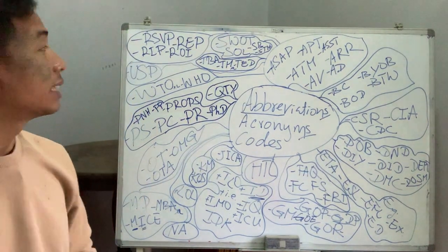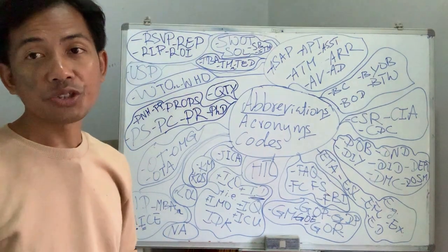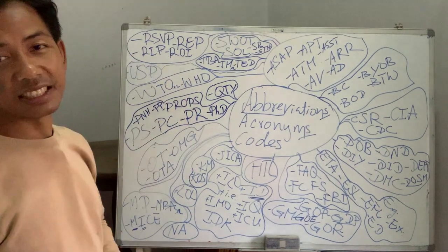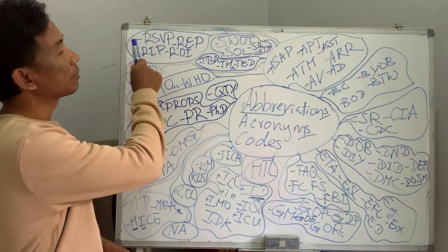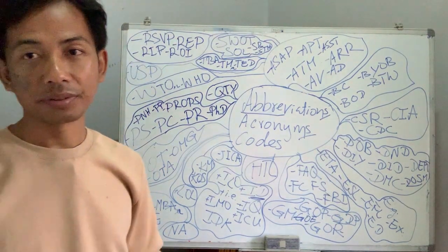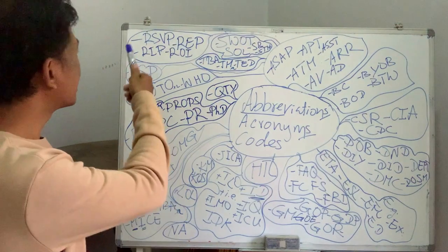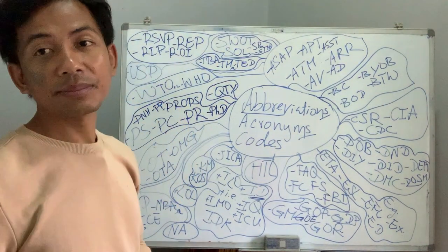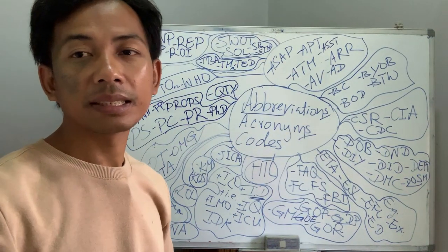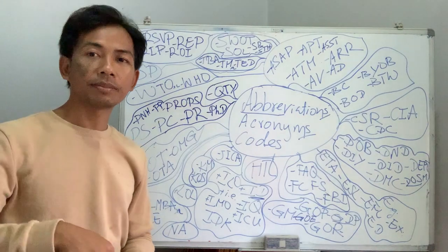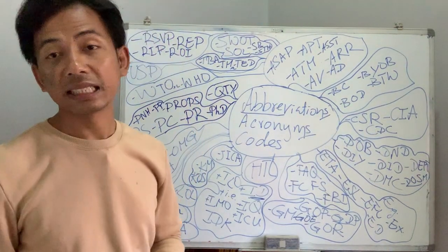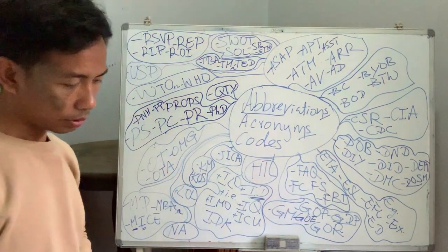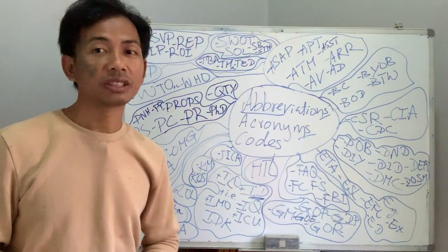RSVP — this is more of a French way of doing it but also very common in English. It stands for 'répondez s'il vous plaît,' meaning please respond or please reserve. Also REP is the airport code for Siem Reap Airport — if you are flying to Siem Reap Airport you have to select REP and you will see REP on your flight ticket.